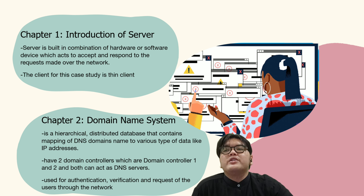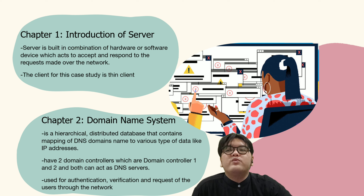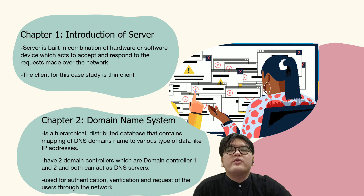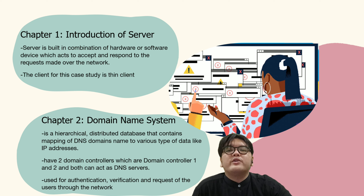Second is Chapter 2, Domain Name System. Domain Name System is a hierarchical distributed database that contains mapping of DNS domain names to various types of data like IP addresses. The Intranet system in Yawata had two domain controllers: domain controller one and two. Both of them can act as DNS servers. The domain controller is a server responsible for authentication, verification, and requests for users on computers or smartphones through the network.